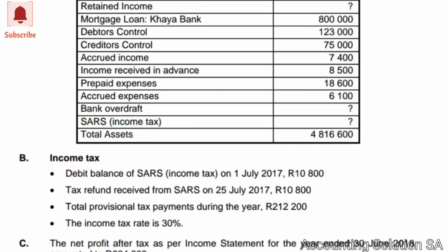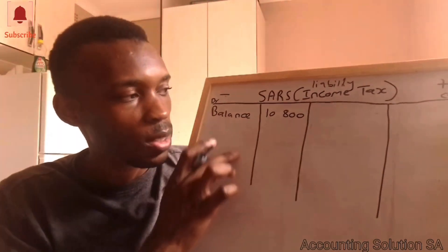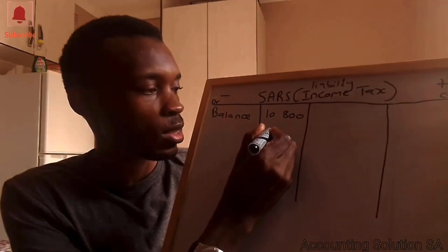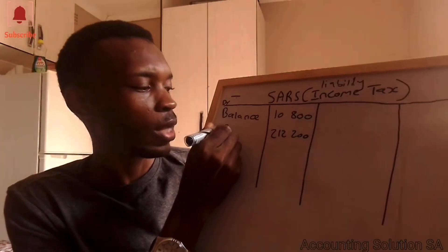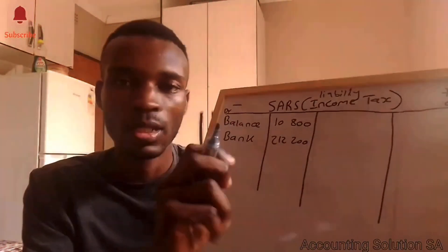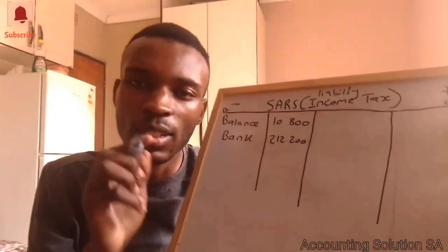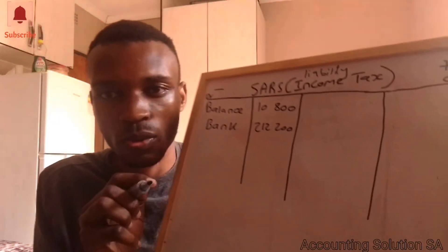The next item is the provisional tax payment during the year: 412,200. We made a payment to SARS, which means we reduce our liability. We record 412,200 on the debit side (bank), because provisional payments are amounts paid to SARS to reduce the liability that will still be reflected. The income tax rate is 30%.